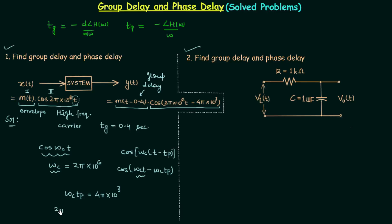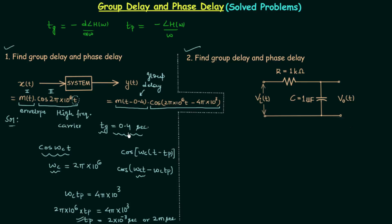We know ω_c is equal to 2π × 10⁶. So we can easily calculate the phase delay t_p by dividing both sides by 2π × 10⁶, which gives t_p equal to 2 × 10⁻³ seconds, or 2 milliseconds. So we have the group delay equal to 0.4 seconds and the phase delay equal to 2 milliseconds. You can see the difference — the group delay is much larger compared to the phase delay. This is all for problem number 1.